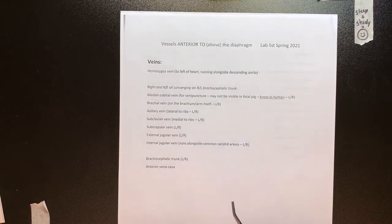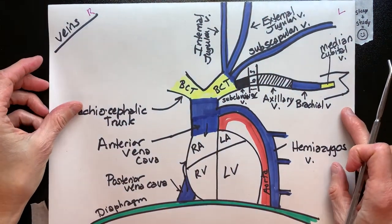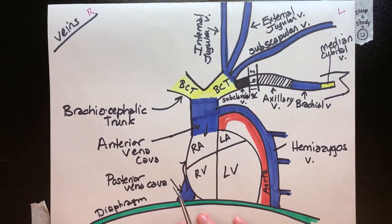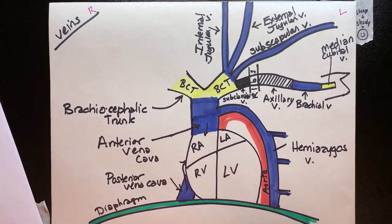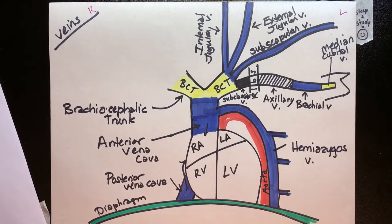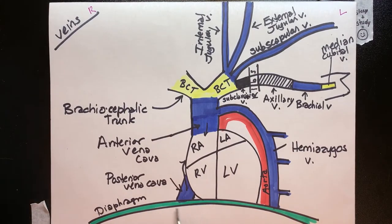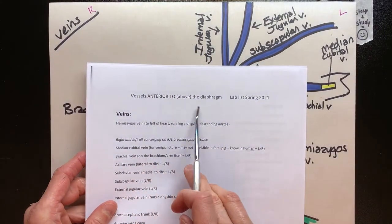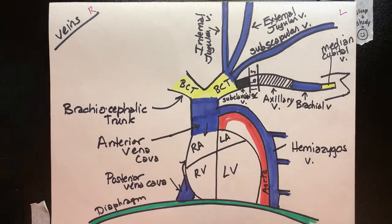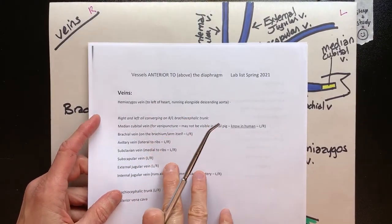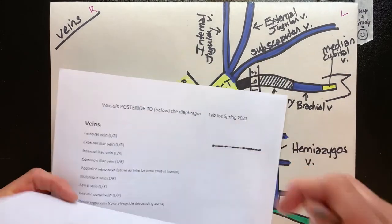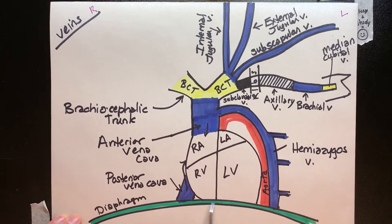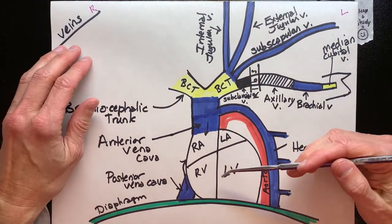Let's not forget the hemiazygos mentioned at the beginning — we'll look at a picture of it. This is the map we drew in lab, and I'll go over it with you. When looking at one of these maps, we always begin with the diaphragm as our divider, because the lists are all relative to the diaphragm. If we're above or anterior to the diaphragm, these are the vessels. If we're below or posterior to it in a quadruped, those are the vessels. So keep the diaphragm in mind when you're studying — are you above it or below it?